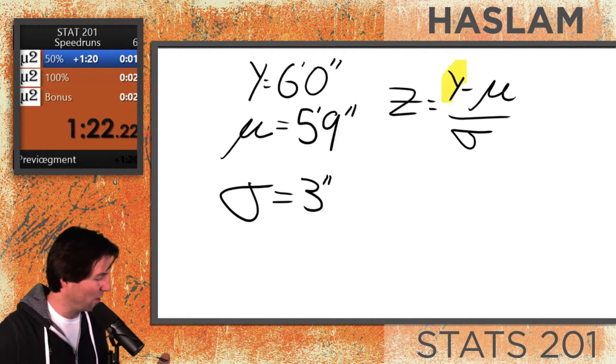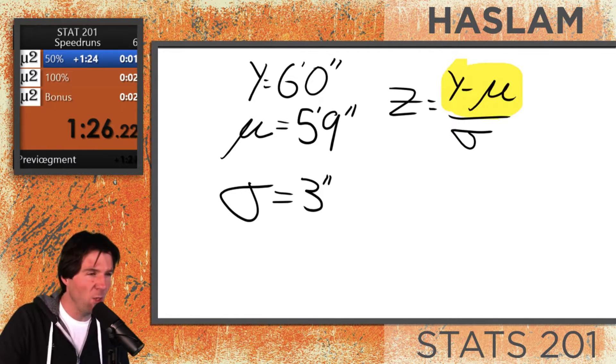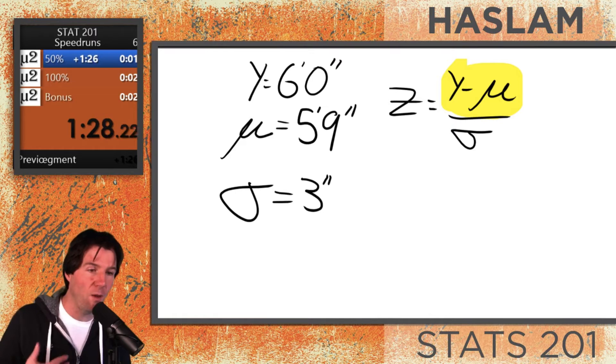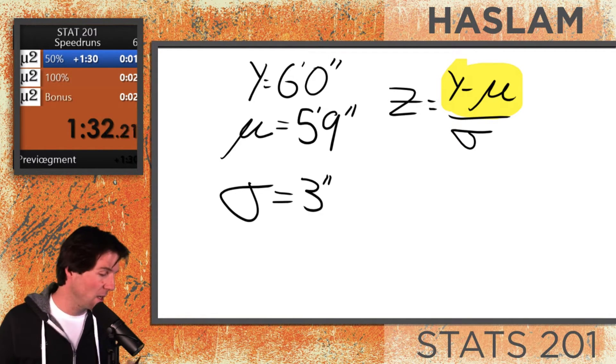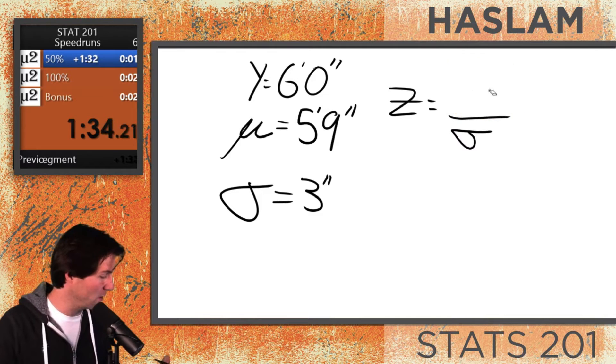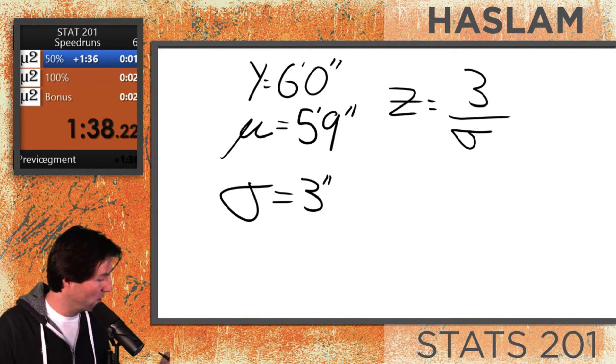Now I want us to focus on the top part of the equation. All the top part of the equation will tell us is how much taller is someone than the mean? How far are they away? The top part of the equation is literally just the distance it is away from the mean, and that would be three inches.